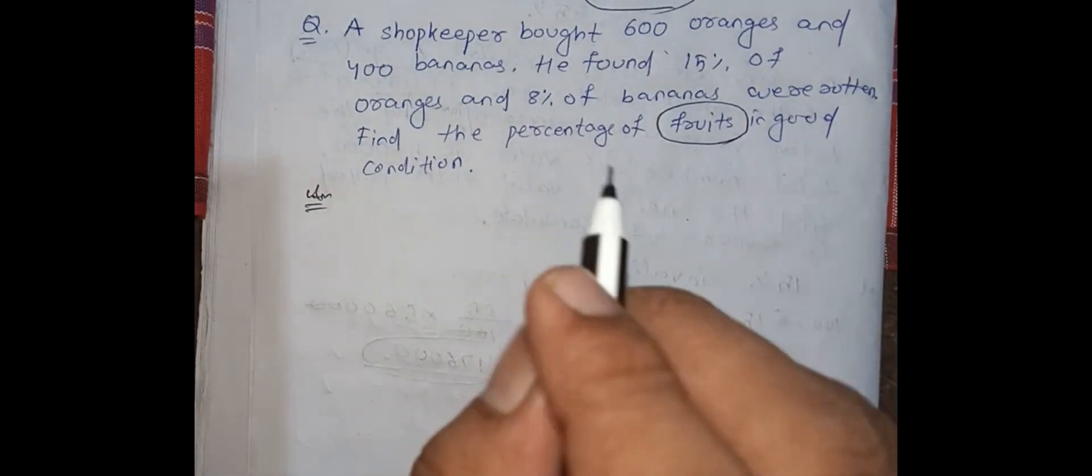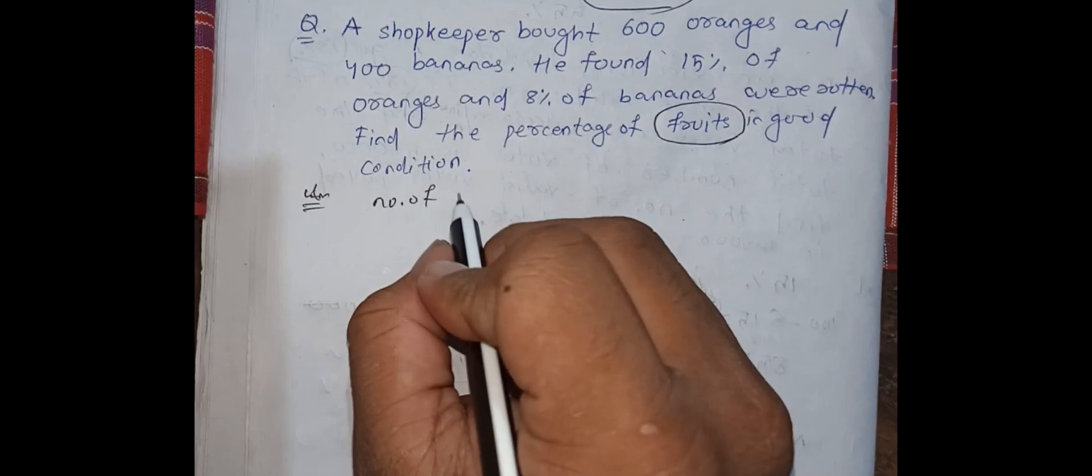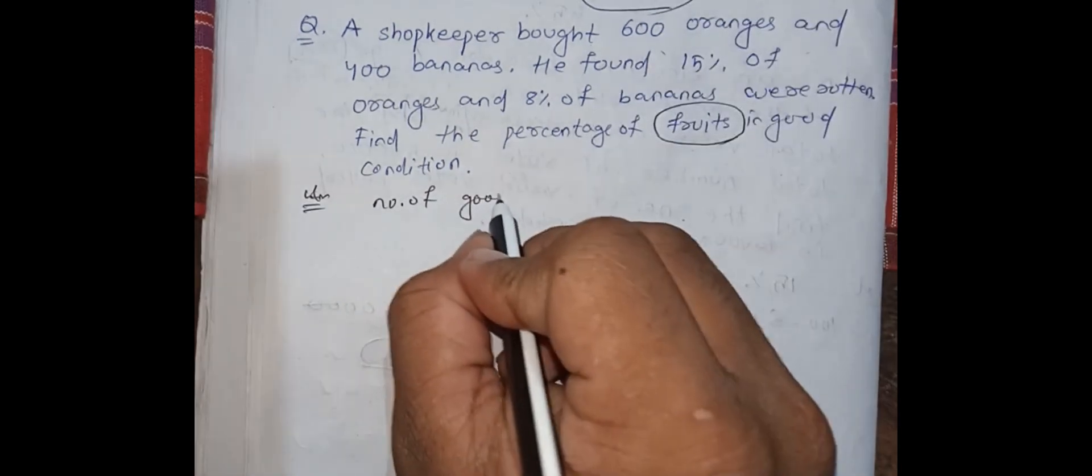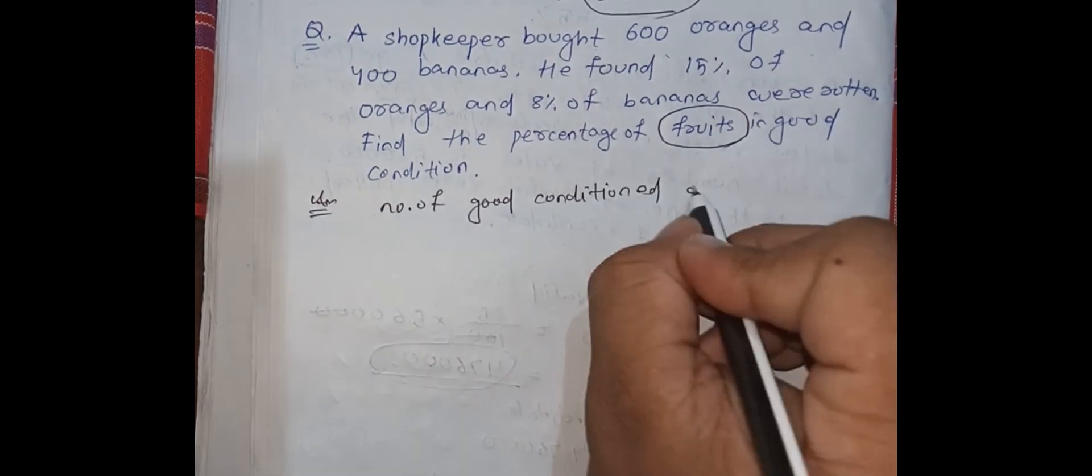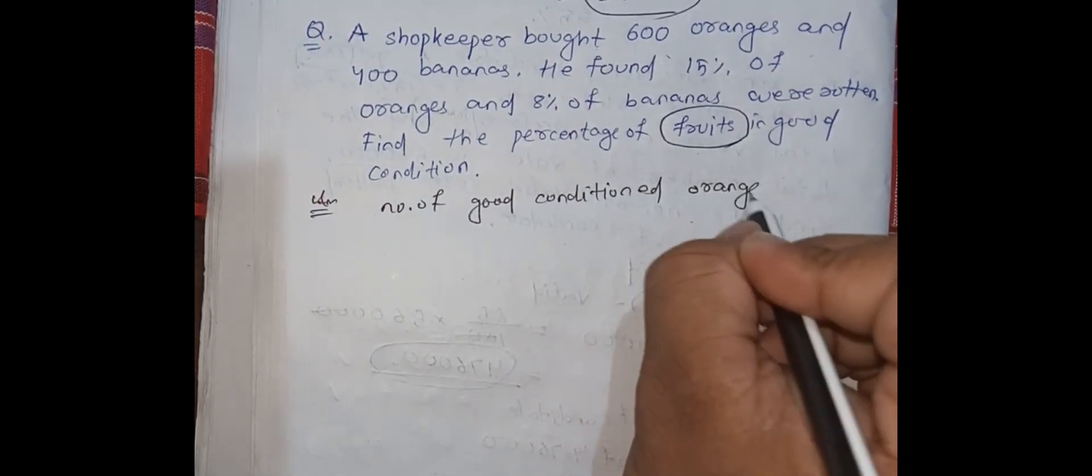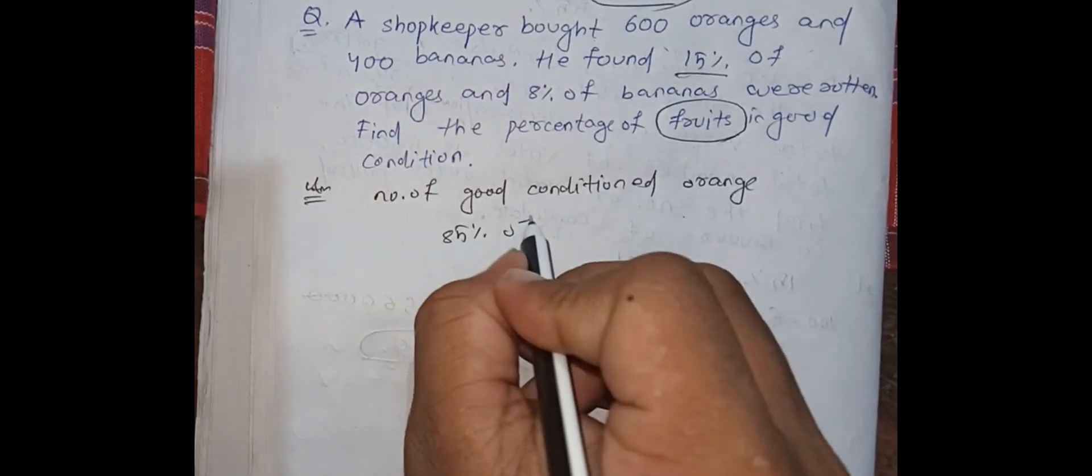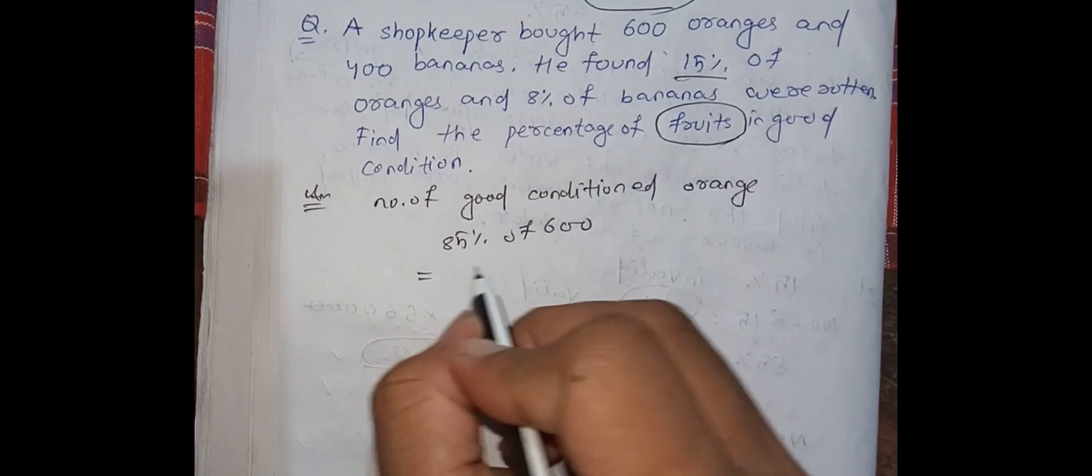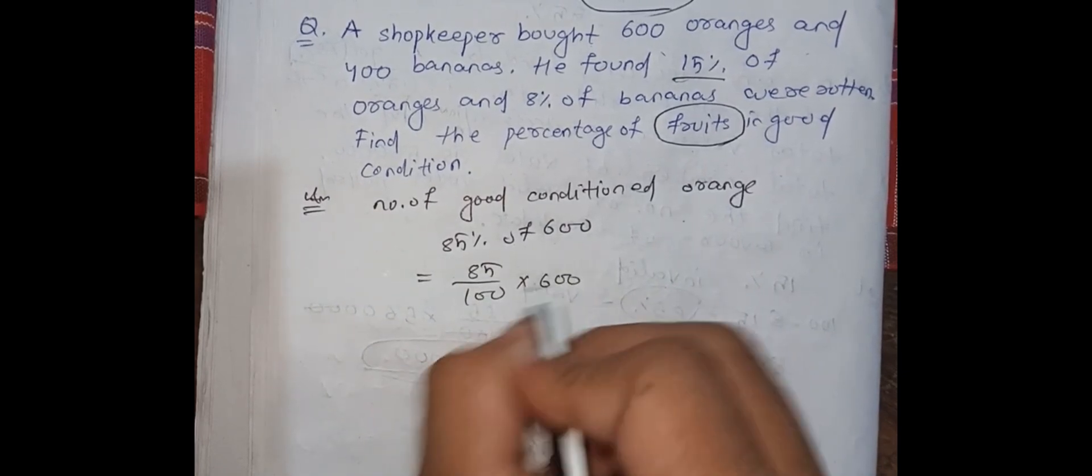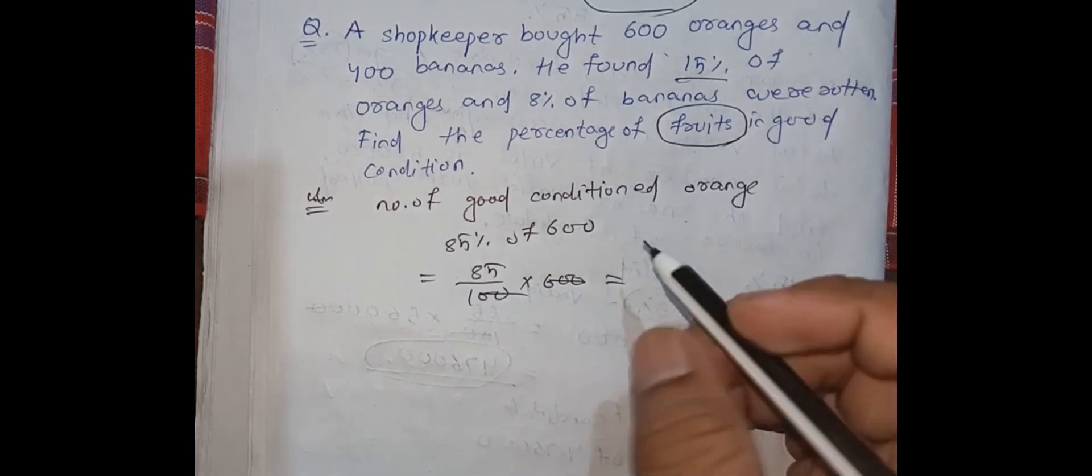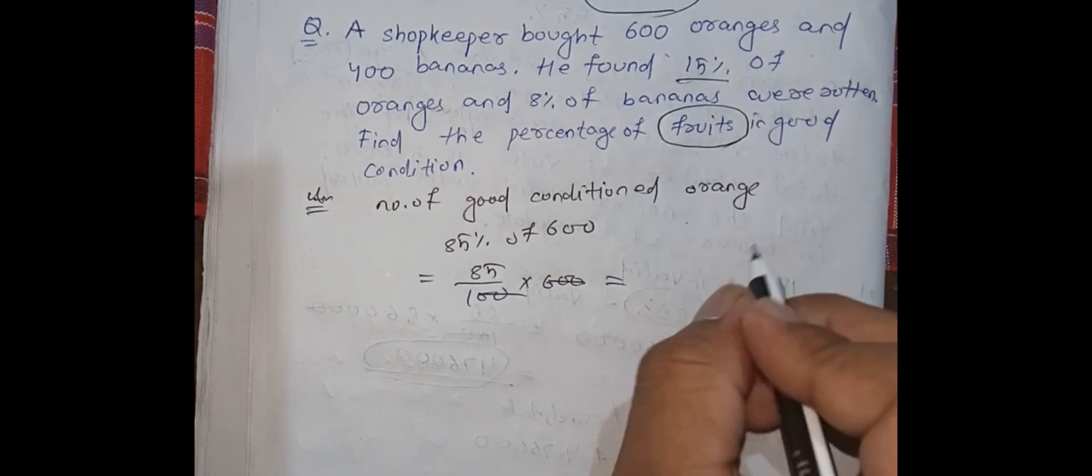So from here, we have to first find out the number of good condition oranges. How will you find out? If 15% are rotten, then 85% of 600 are in good condition. That is 85 by 100 into 600. Two zeros will be cancelled out. 85 into 6, and if you multiply, you will get the answer as 510.